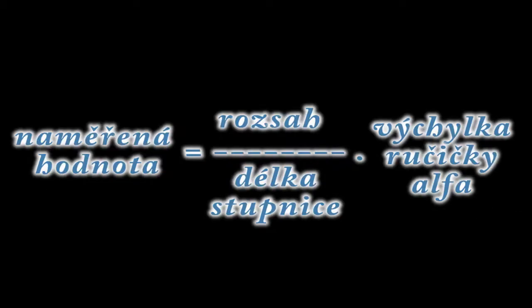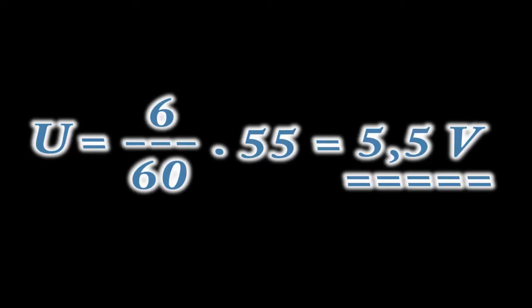Naměřenou hodnotu určíme podle tohoto vztahu: naměřená hodnota se rovná rozsah lomeno délka stupnice krát výchylka ručičky alfa. Do vztahu dosadíme za rozsah 6, za délku stupnice 60 a za výchylku alfa 55. Naměřená hodnota je 5,5 V.